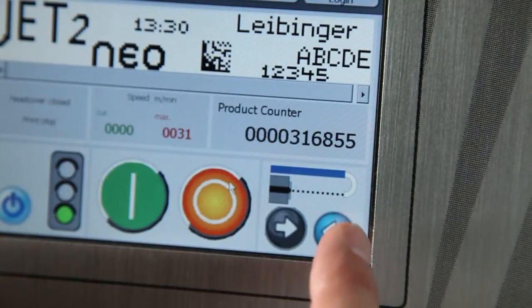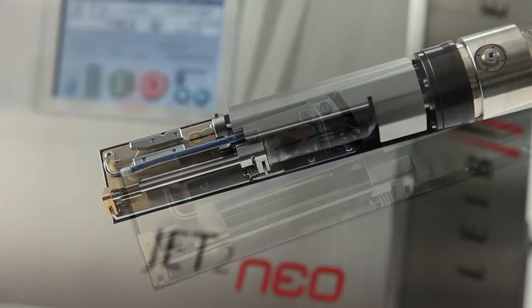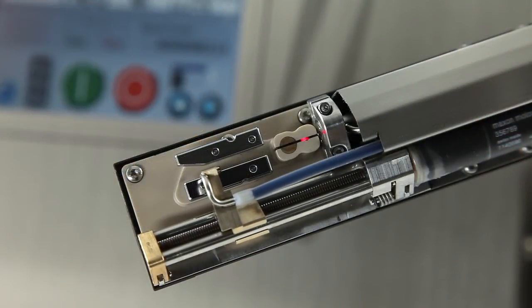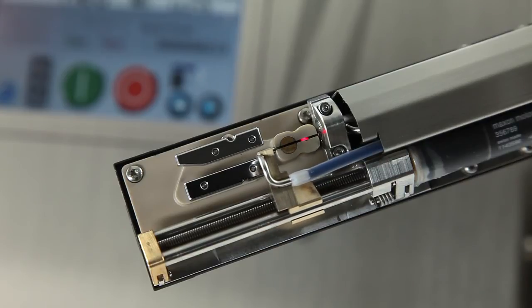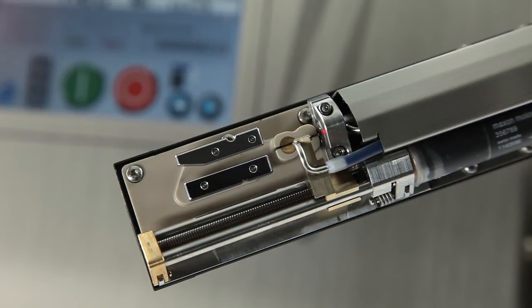When switching off, gutter and nozzle are automatically brought together, which results in an airtight ink circuit. A drying of ink is prevented effectively.